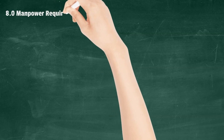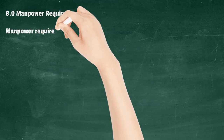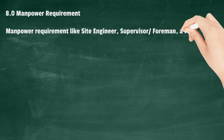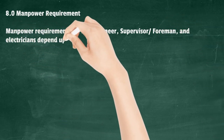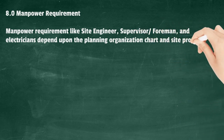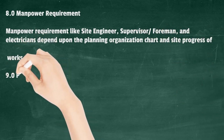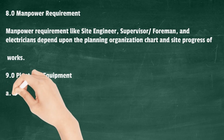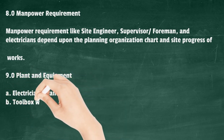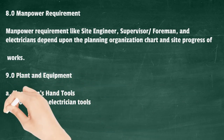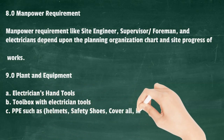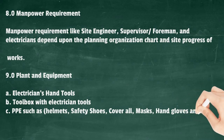Manpower Requirement: Site engineer, supervisor/foreman, and electricians depend upon the planning organization chart and site progress of works. Plant and Equipment includes: electricians' hand tools, toolbox with electrician tools, and PPE such as helmets, safety shoes, coveralls, masks, hand gloves, and goggles.